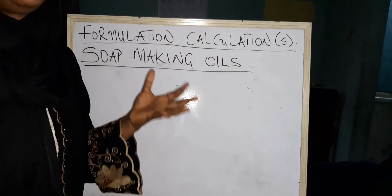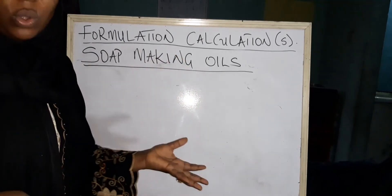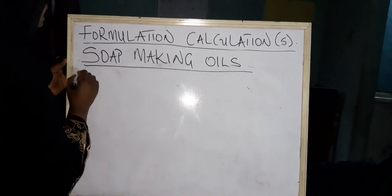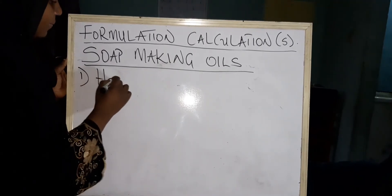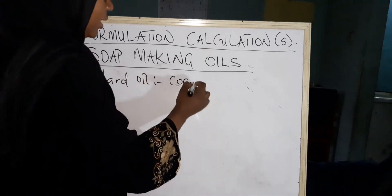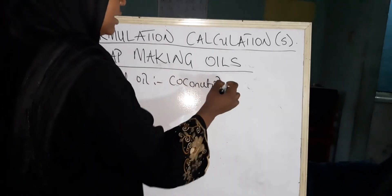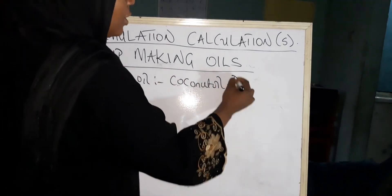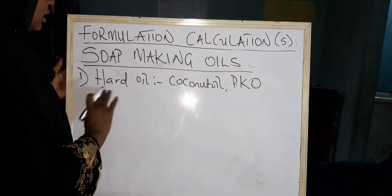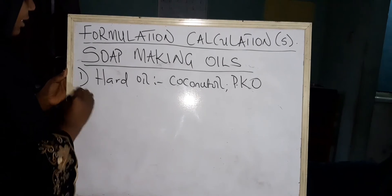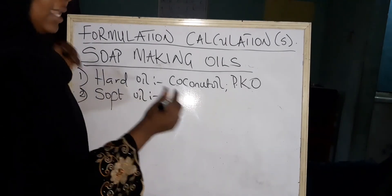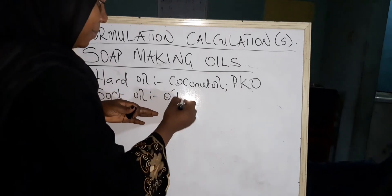In soap making we have about three types of oils. The first one is the hard oil. An example of hard oil could be coconut oil — that is a hard oil. Palm kernel oil (PKO) is also a hard oil.